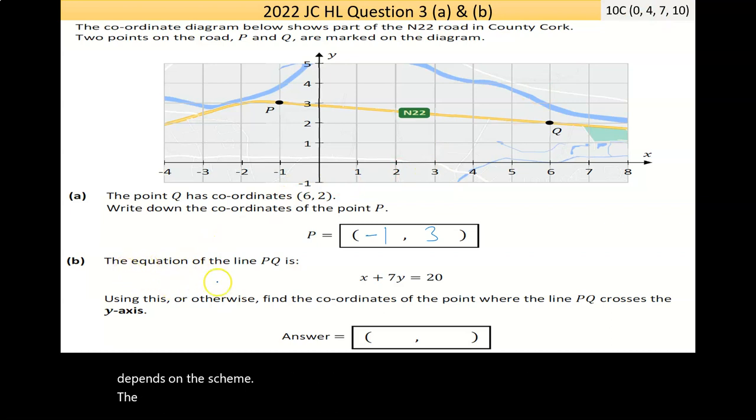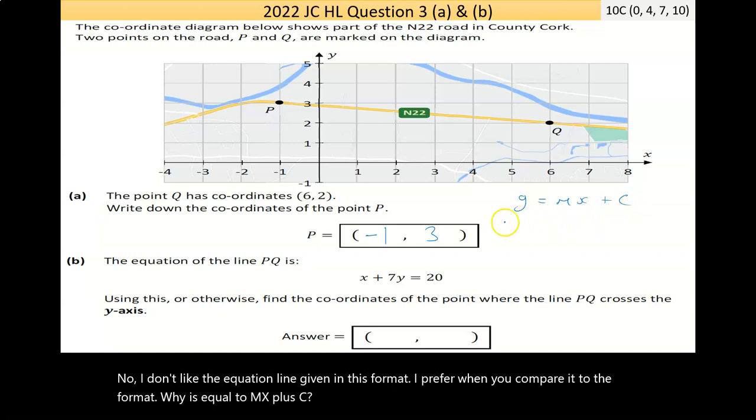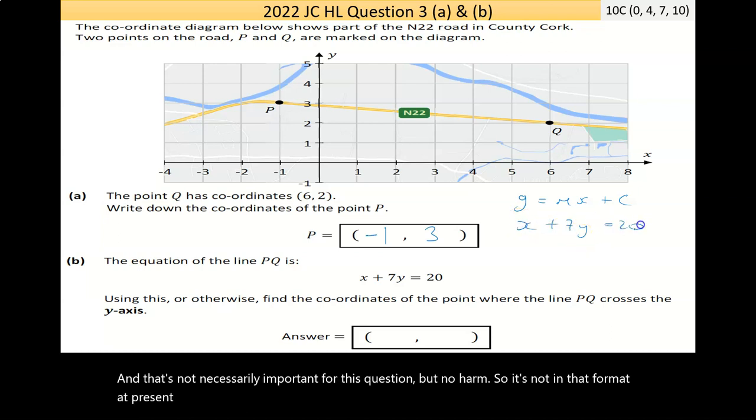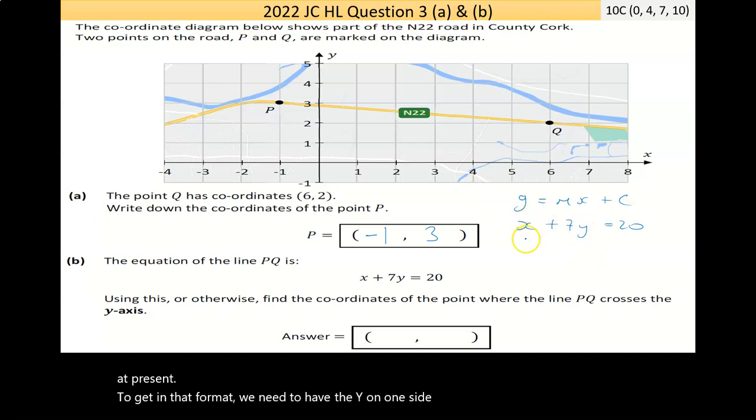The equation of the line PQ is X plus 7Y equals 20. I don't like the equation of the line given in this format. I prefer when you compare it to the format Y is equal to MX plus C. That's not necessarily important for this question, but no harm.